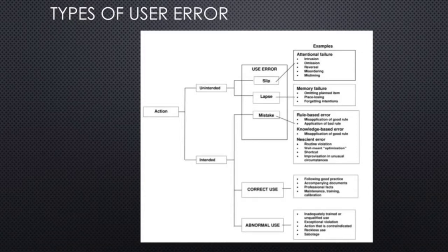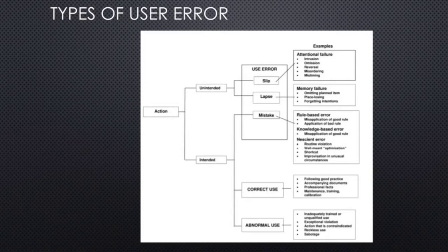We have to consider the types of user error while designing or developing a product. There are two types of user error: unintended user error and intended user error. If a user has more experience with the product, they may make mistakes due to memory failure or forgetting some procedures — those errors fall under unintended user error. If a user has no training on the product and is very new to it, they intentionally try to operate the device and make mistakes — those errors fall under intended user error.